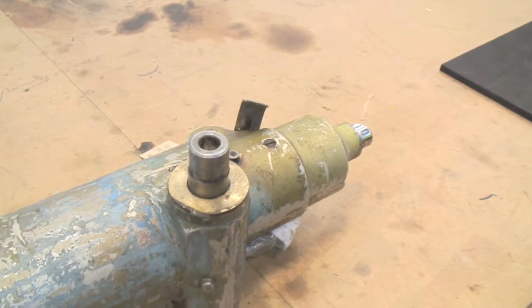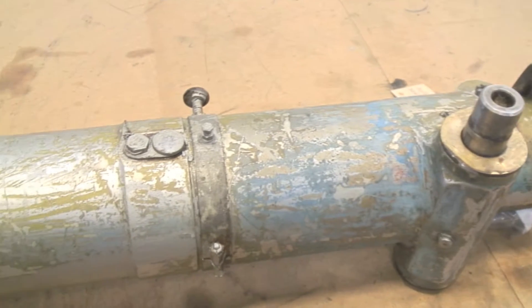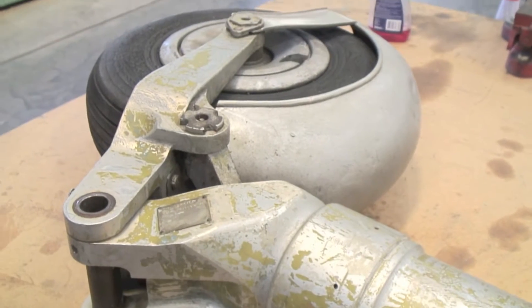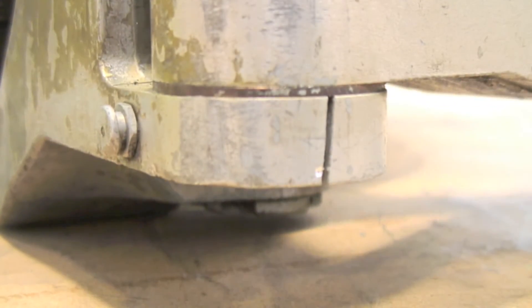What we have here is the leg off the Avro 707C. Typically, before we do any aircraft movements, we always inspect the leg, especially when we're going to fit a tow-in bar. Unfortunately, when we went to move it last time, we found that the leg was cracked.